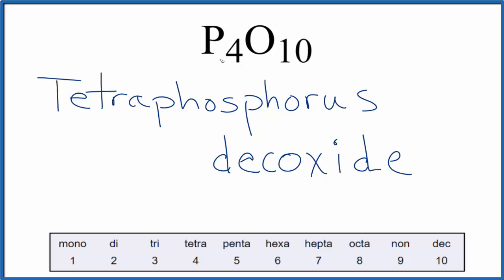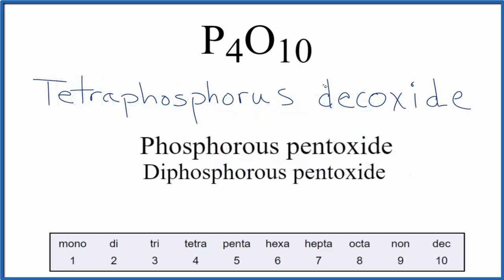There are two more common ways that we'll see it written, though. For historical reasons, most of the time you'll see P4O10 called phosphorus pentoxide. In fact, this is the IUPAC name for P4O10. Sometimes you'll see it called diphosphorus pentoxide as well.